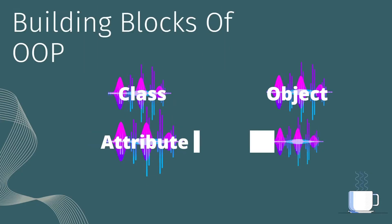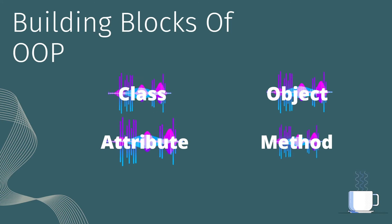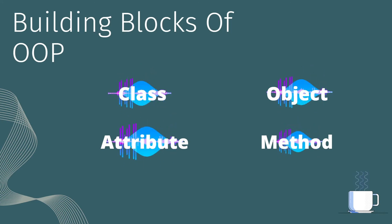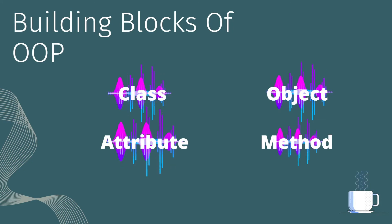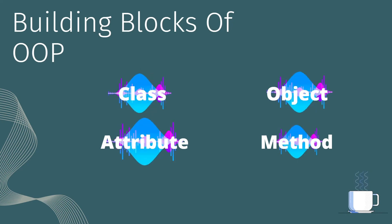Now let's see the building blocks of object oriented programming. We have four building blocks: first, class; second, object; third, attribute; and fourth, method. In this video we are going to see only class and object, and in the next video we are going to see attribute and method.